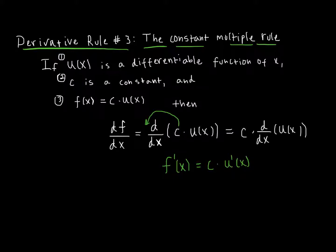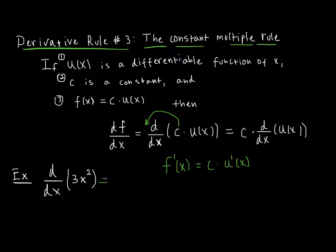Let's look at an easy example: the derivative with respect to x of 3x squared. I can employ the constant multiple rule — I have a differentiable function x squared and a constant 3. I pull out the constant 3 and take the derivative of x squared, which is 2x. So I have 3 times 2x, which is 6x.